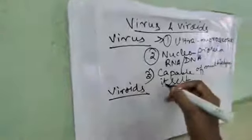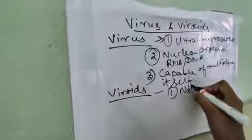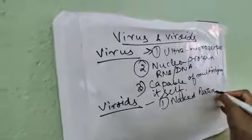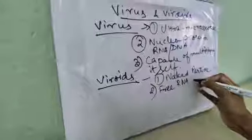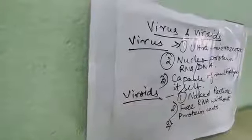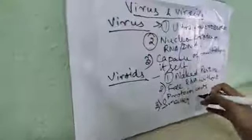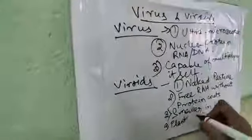Now we will see about viroids. Number one: it is a naked particle — meaning it is without a covering. Number two: it is made up of free ribonucleic acid in which protein coats are absent — that means free RNA without protein coats. Number three: it is generally smaller in size, and that RNA is single-stranded, linear or circular. Viruses are generally larger than viroids. Number four: viroids affect plants only, whereas viruses affect all plants and other organisms.